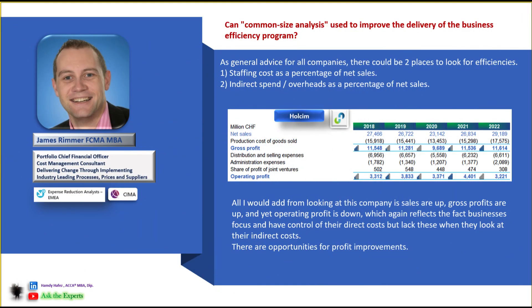Let us see a simple piece of advice by another global expert, James Premier. I asked James about using common size analysis to improve the delivery of a business efficiency program. James provided general advice for all companies to further analyze two areas: the staffing cost as a percentage of net sales, and the indirect spend or overheads as a percentage of net sales.